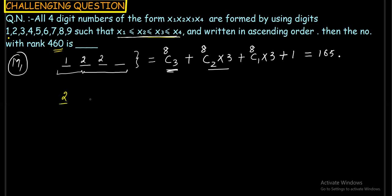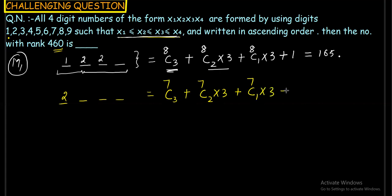Numbers starting with 2: now 2 is fixed, so the remaining usable digits are 3, 4, 5, 6, 7, 8, 9 — that's 7 digits. Using the same case logic: 7C3 + 7C2 × 3 + 7C1 × 3 + 1, and when you add these up the total comes to 120.